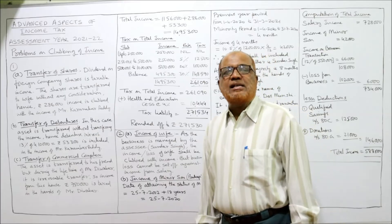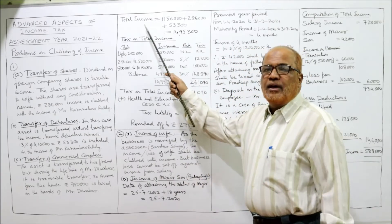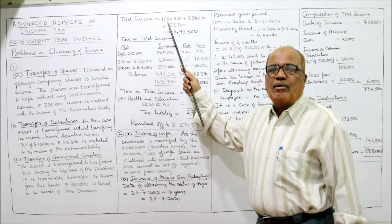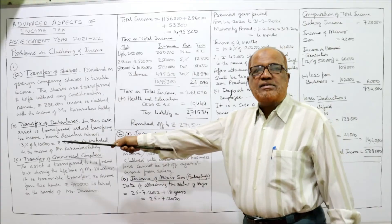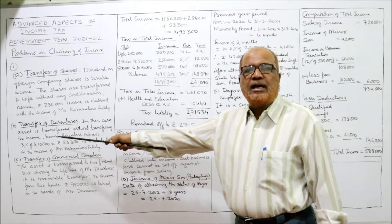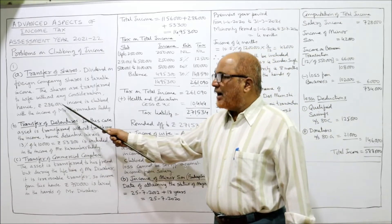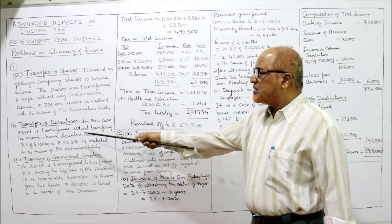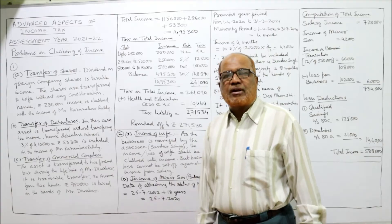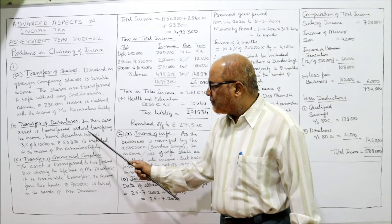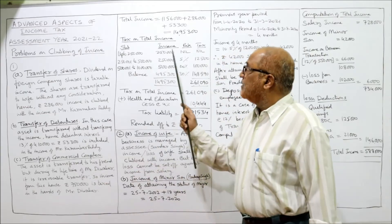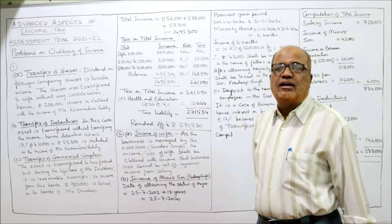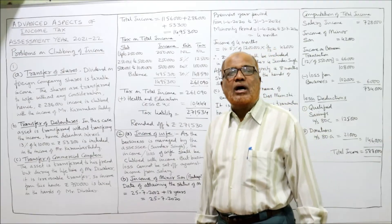Now we find the tax liability. Karunakar Reddy's individual income is ₹11,56,000. To this we add the wife's income of ₹2,86,000 which is clubbed, and the debenture interest transferred to Javed of ₹53,300. The total income is ₹14,95,300.